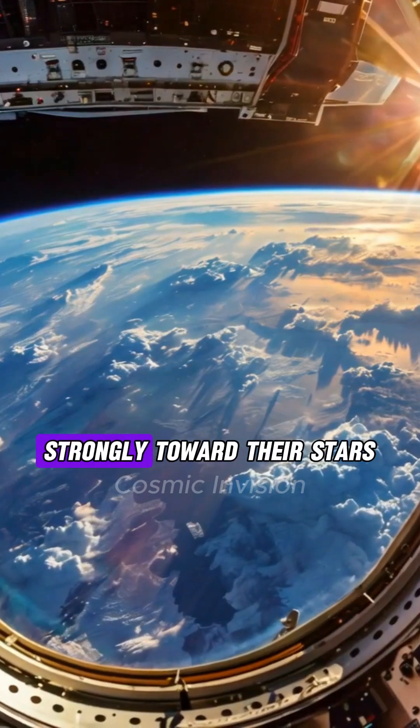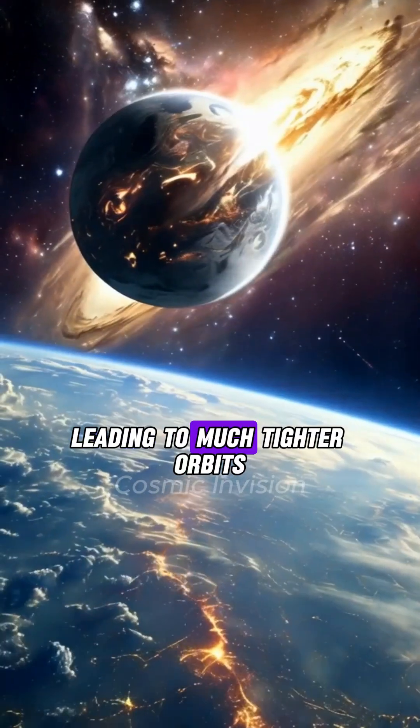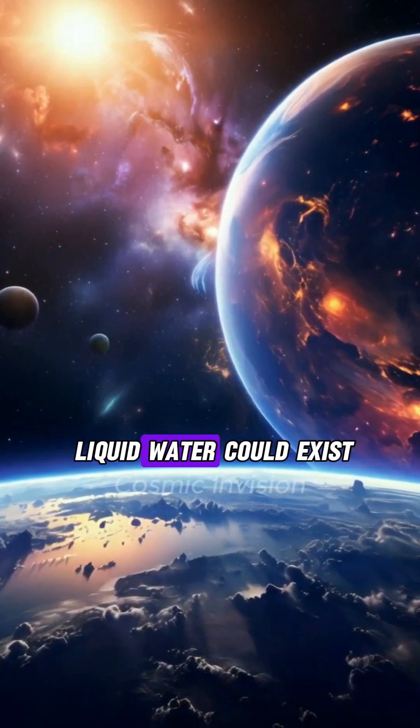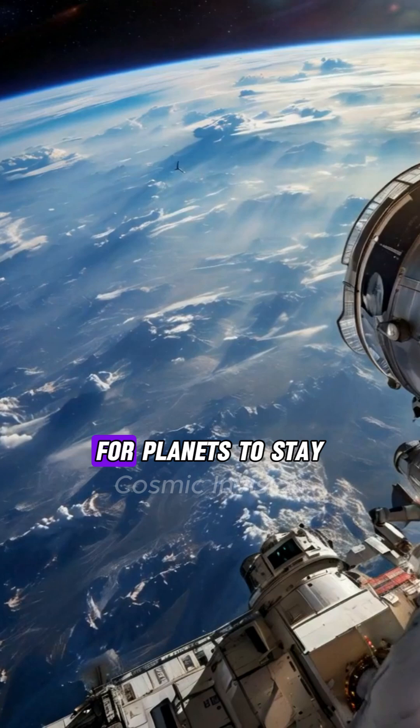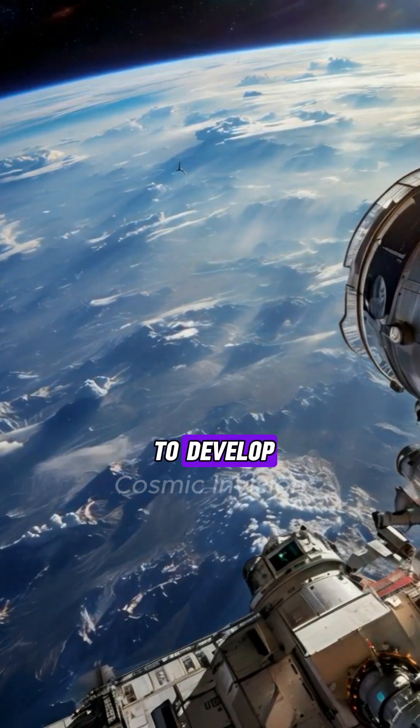Planets would be pulled more strongly toward their stars, leading to much tighter orbits. The habitable zones where liquid water could exist would be much closer to the stars, making it more challenging for planets to stay within this zone long enough for life to develop.